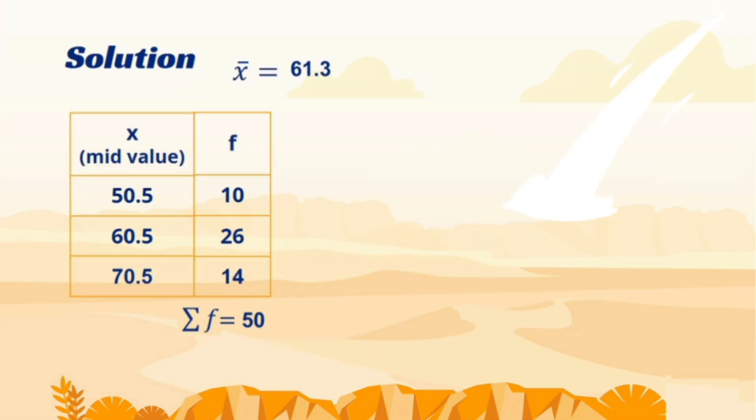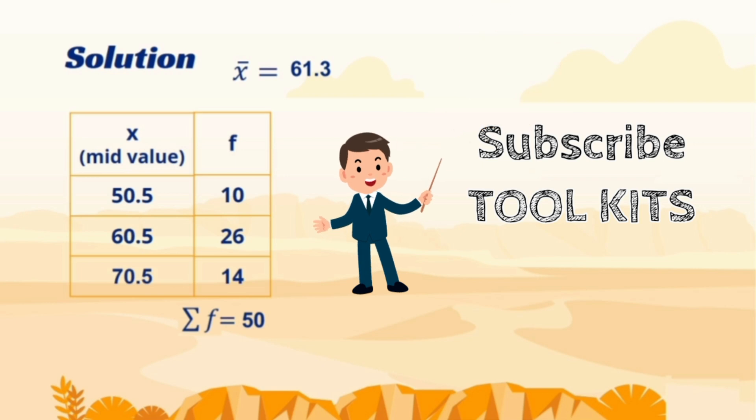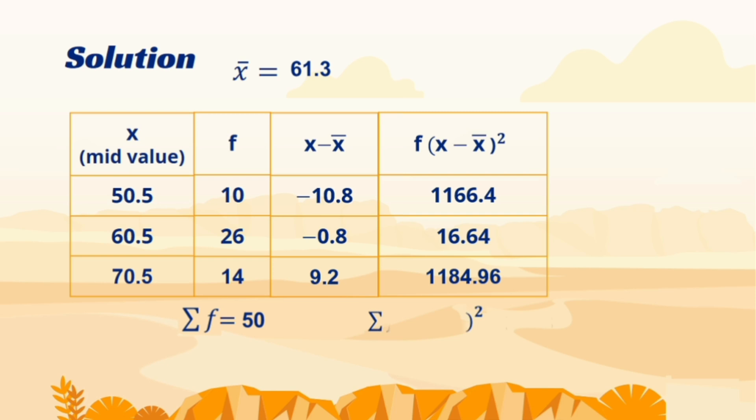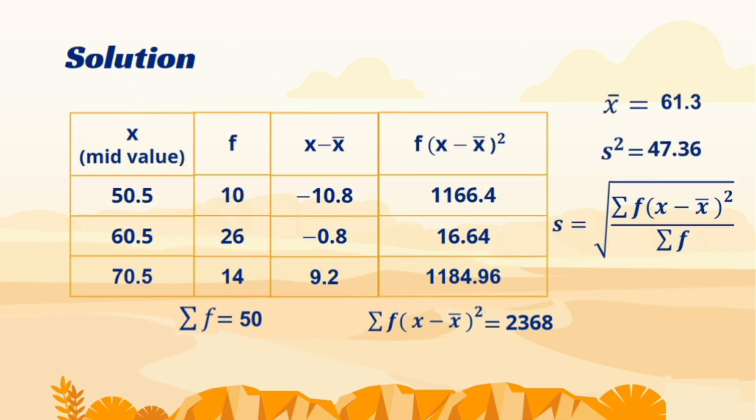Secondly, we required the sum of product of frequency and square of deviation of observation from mean. For this purpose, we will make another column x minus x̄. And then we will make another column where frequency and square of this column will be multiplied. After that, we will add all the required sums and put them in the formula. The result is in square of the unit. Take its positive square root to get standard deviation. Our results are telling us that the variation that is coming in the paper submission is about 7 minutes from average.